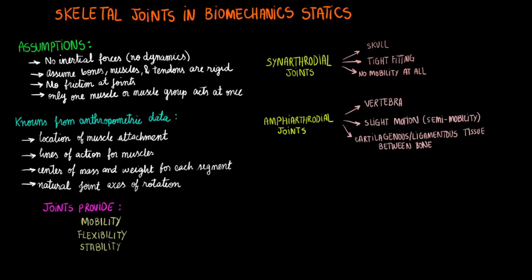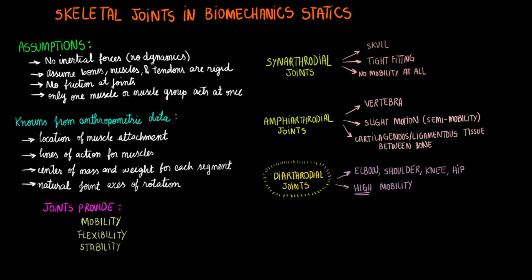The third and last, and the most common type of joint, is the diarthrodial joint, which allows for the most mobility of all. This is the one that will end up being tested on way more often. Examples of diarthrodial joints include your elbow, shoulder, and knee joints.